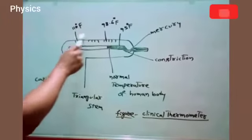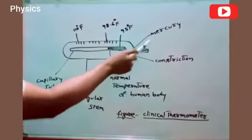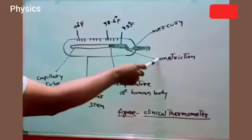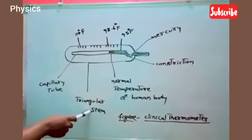Are you understand? This is a clinical thermometer. In this parts: Mercury, Constriction, Normal Temperature of Human Body, Triangular Stem.